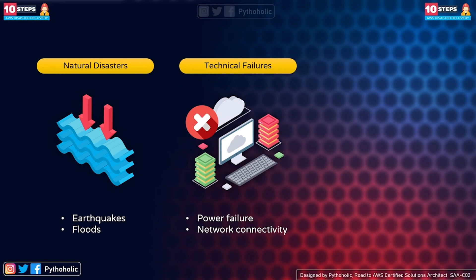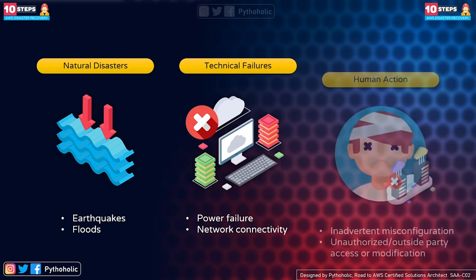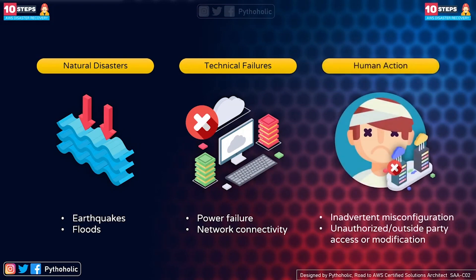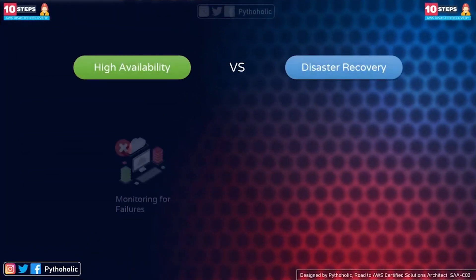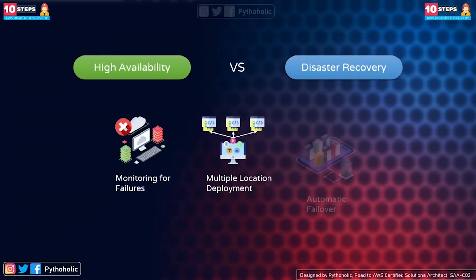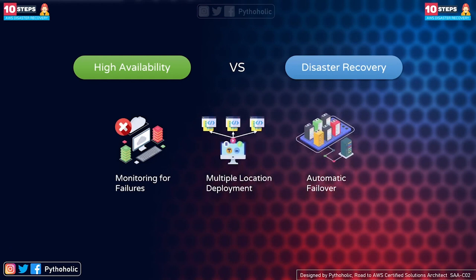Or it could be the most common disaster — human action — like someone who planned and plotted a bad configuration, or damage caused by unauthorized access such as deleting your data or erasing all your customer information. So why are we saying that high availability is not disaster recovery?